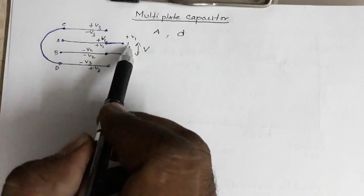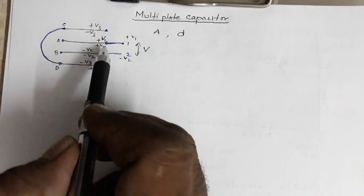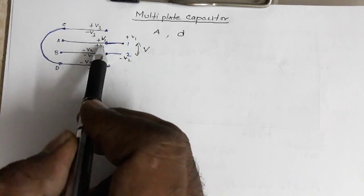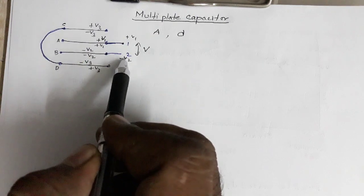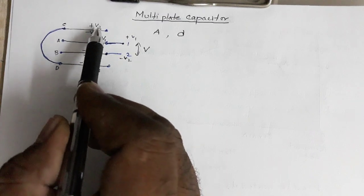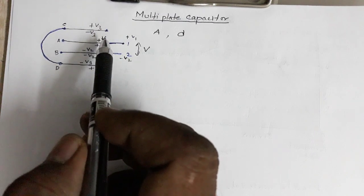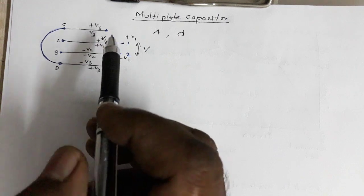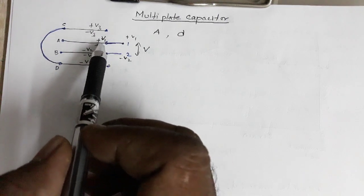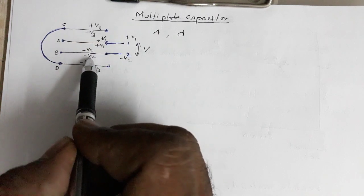The key idea is: if a plate is connected to a source of potential, both sides acquire that same potential. For plates not directly connected, their potentials are determined by the charge induced through electrostatic induction from neighboring plates.